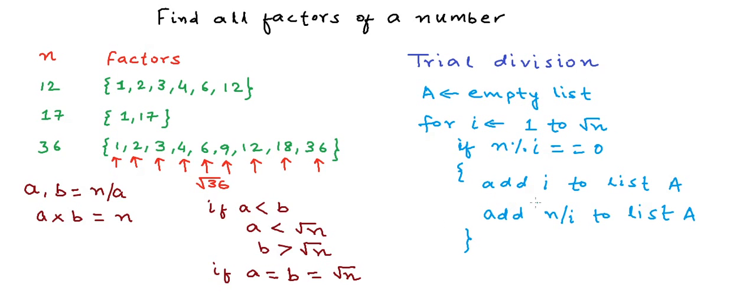Now there still is one issue with this code. We have not handled the case when a is equal to b. When a is equal to b, using this algorithm, we will add the factor twice in the list. So we need to do only a little change to handle this. We need to say that if i is not equal to square root of n, which will be the case when a will be equal to b, then only add n upon i to list A. As we know, when the cofactors are equal, then the factor is square root of n.